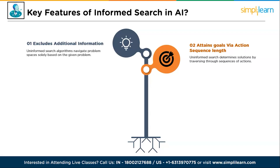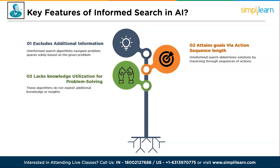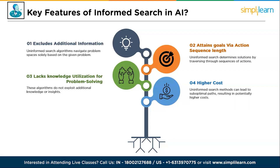The third feature is: lacks knowledge utilization for problem solving. These algorithms do not exploit additional knowledge or insights about the problem domain; they rely solely on the problem structure elements and available actions. The fourth feature is: typically incurs higher cost than informed search. Uninformed search methods can lead to substantial paths, resulting in potentially higher cost to reach the goal state when compared to informed search algorithms that leverage heuristic information.